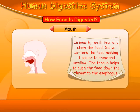Mouth. In the mouth, teeth tear and chew the food. Saliva softens the food, making it easier to chew and swallow. The tongue helps to push the food down the throat to the oesophagus.